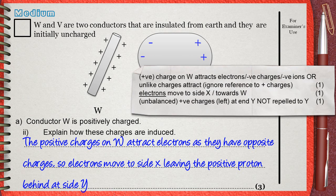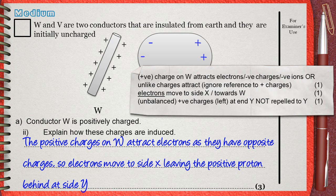Another thing here we have to know from the mark scheme. The mark scheme awards three marks for this question. The first mark is for mentioning positive charges on W that attract the electrons, and this is what we exactly said.